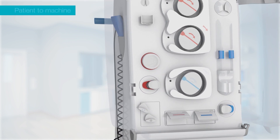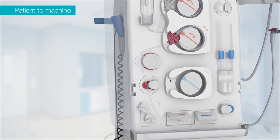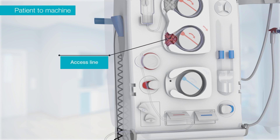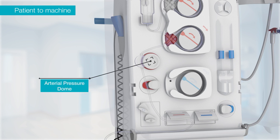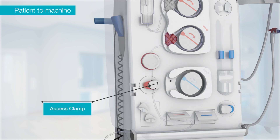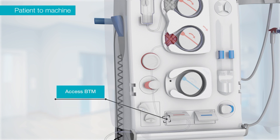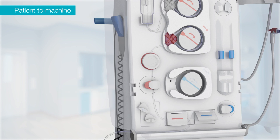For the connections of the patient to the machine, fit the arterial line, also called the access line spike, into the blood pump. You will hear the machine beep. Slide the line into the arterial pressure port. Next, put the line in the access clamp. Attach the arterial line into the blood volume monitor, followed by the access blood temperature monitor. Connect the heparin port if needed.